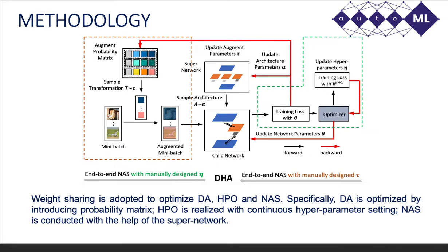DHA is a differentiable joint optimization solution for efficient end-to-end AutoML components, including DA, HPO, and NAS. The optimization strategy with weight sharing is adopted across DA, HPO, and NAS by respectively introducing the probability matrix, the continuous hyper-parameter setting, and the super-network architecture.